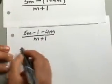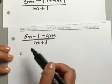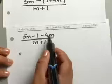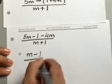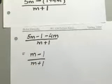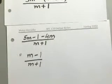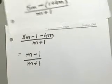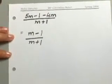So now you can go ahead and combine your like terms together. So 5M minus 4M will give you 1M or just M minus 1 over M plus 1. And you can see this is already in lowest terms, so you don't have to break it down any further than what you have here.